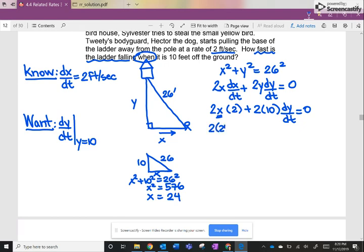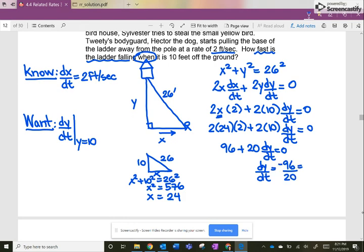So now I substitute 24 for X. And now I can isolate dY/dt and find how quickly this ladder is falling. So 2 times 20 is 48. Then I get 96 plus 20 dY/dt. And I end up with dY/dt is equal to negative 96 over 20, which is negative 4.8 feet per second. So the ladder is falling at 4.8 feet per second when it is 10 feet off the ground. Fantastic.